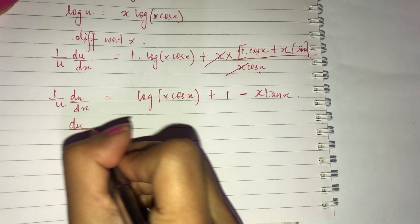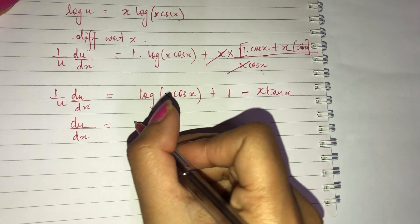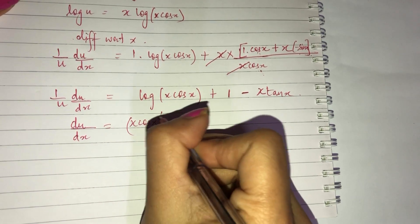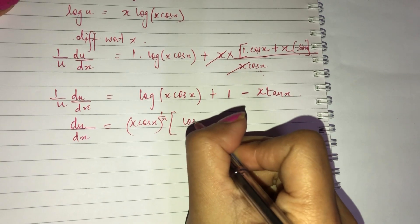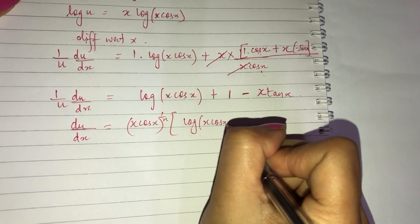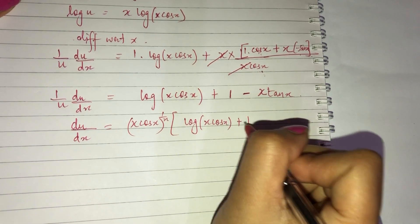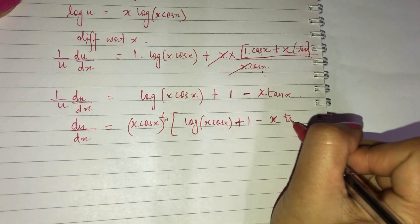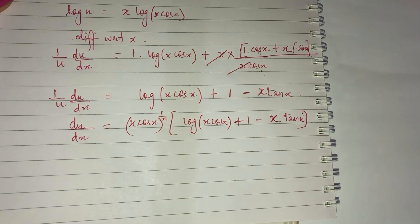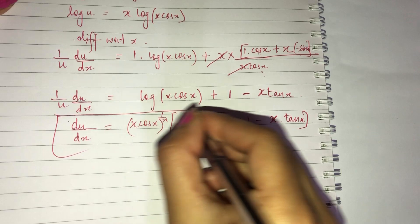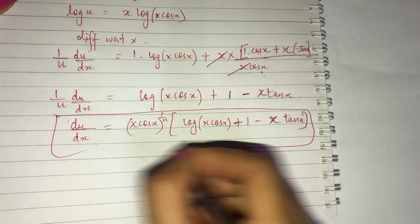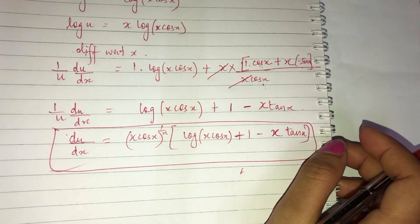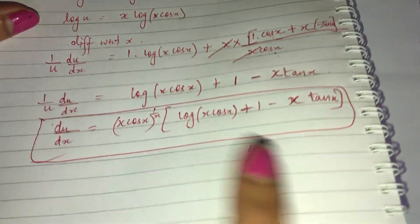So du/dx = u · [log(cos x) + 1 − x·tan x], where u = x·cos(x) raised to x. That is du/dx = x·cos(x)^x · [log(cos x) + 1 − x·tan x]. Now let's find dv/dx.